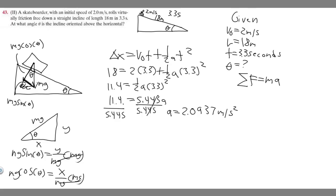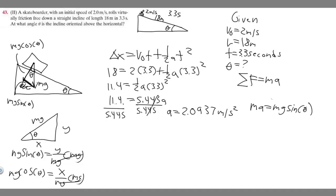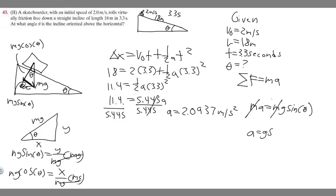Keep in mind: the sum of all the forces equals ma, and you base this off the direction of motion. The force in the direction down the incline is mg times the sine of theta. So the sum of all forces in this direction gives us ma equals mg times the sine of theta. Notice how the m's cancel, so essentially a equals g times the sine of theta.